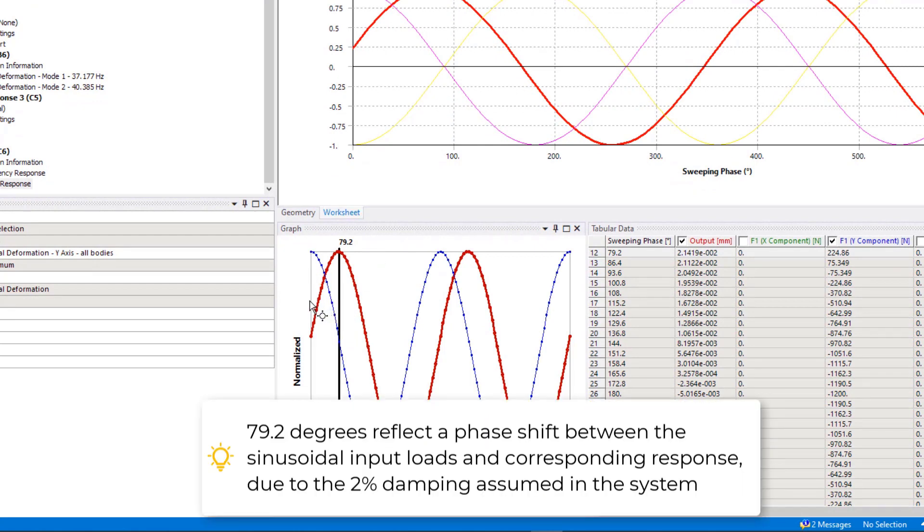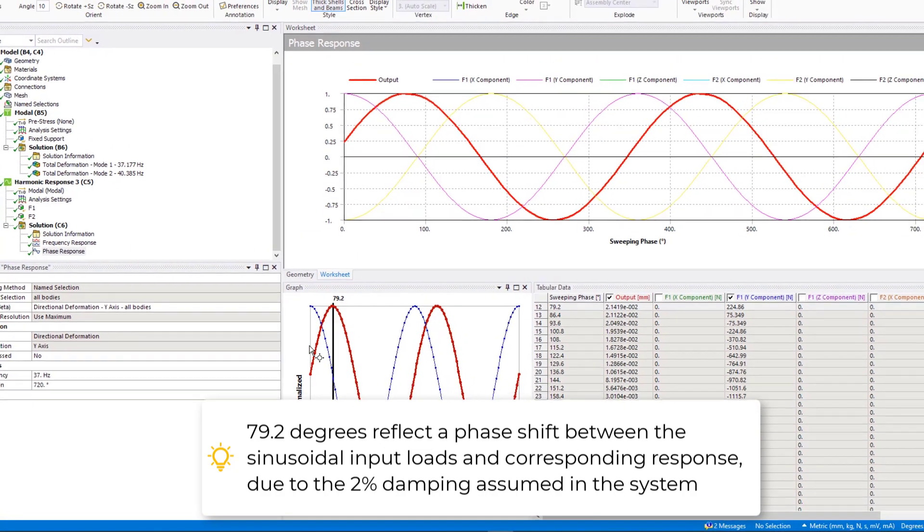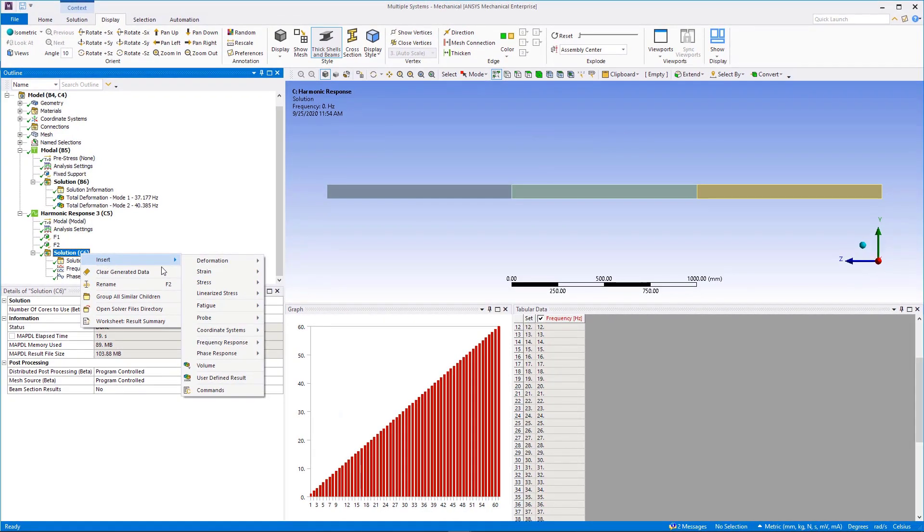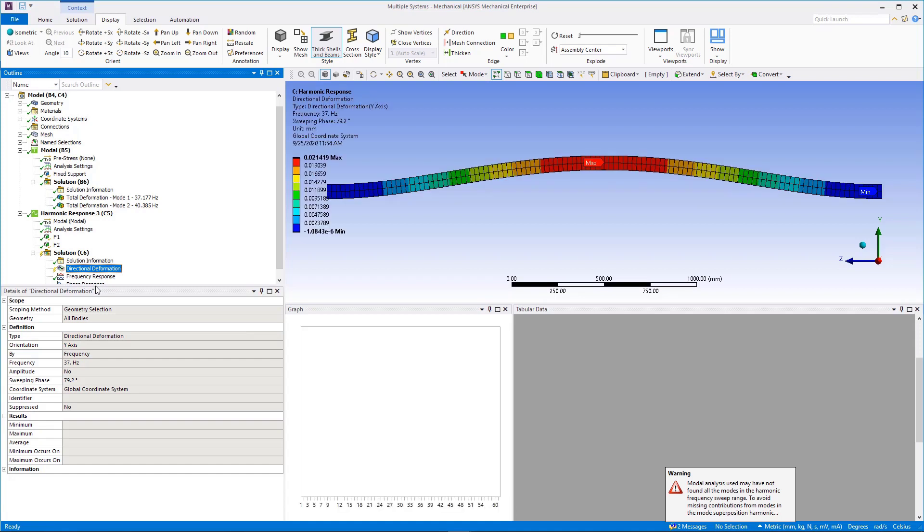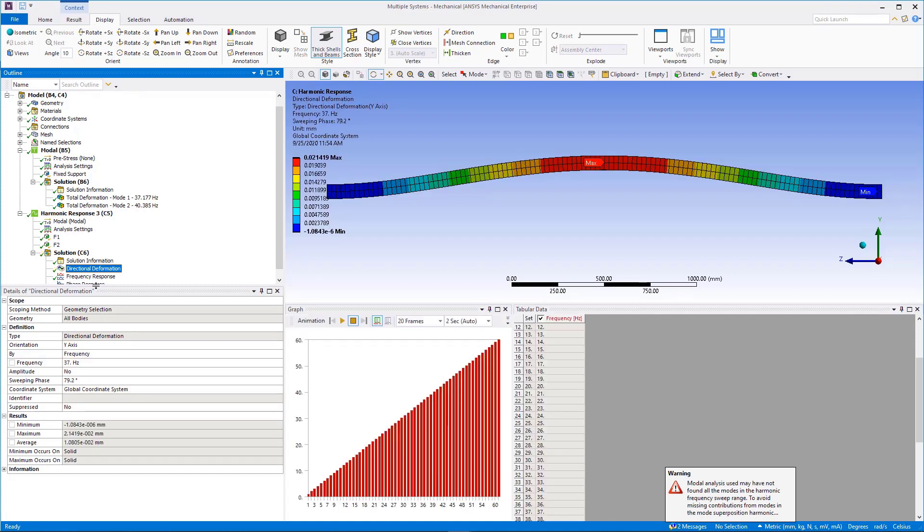We next want to determine where on the physical structure the peak response is occurring. We can do this by simply right mouse button and insert displacement in y-direction. Define frequency of 37 Hz and sweep phase of 79.2 degrees.